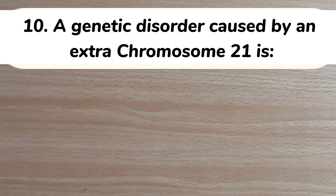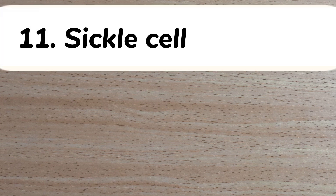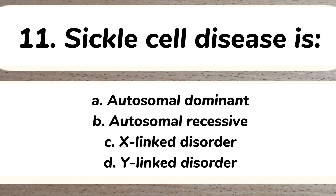Number ten: a genetic disorder caused by an extra chromosome 21 is A) Edward syndrome, B) Down syndrome, C) Klinefelter syndrome, D) Patau syndrome. Answer: B) Down syndrome.